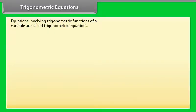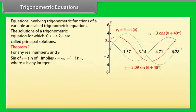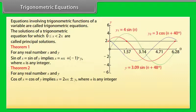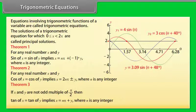Trigonometric Equations: Equations involving trigonometric functions of a variable are called trigonometric equations. The solutions for which 0 ≤ x < 2π are called principal solutions. Theorem 1: sin x = sin y implies x = nπ ± (−1)ⁿy, where n is any integer. Theorem 2: cos x = cos y implies x = 2nπ ± y, where n is any integer. Theorem 3: If x and y are not odd multiples of π/2, then tan x = tan y implies x = nπ + y, where n is any integer.